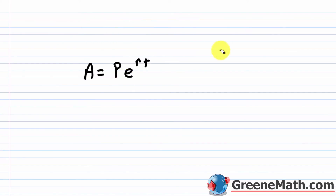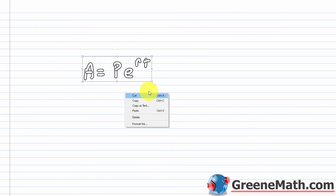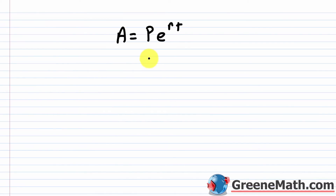This special number e is available on your calculator. It's approximately 2.718 if you want to approximate it, but I would always use your calculator for it because it will give you many digits and a more accurate answer.